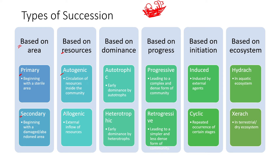Allogenic succession is where external flow of resources happens — for example, in streams, plains, or fertilized lands. There are many examples where nothing existed but resources came in from outer sources, and that became the source for succession.